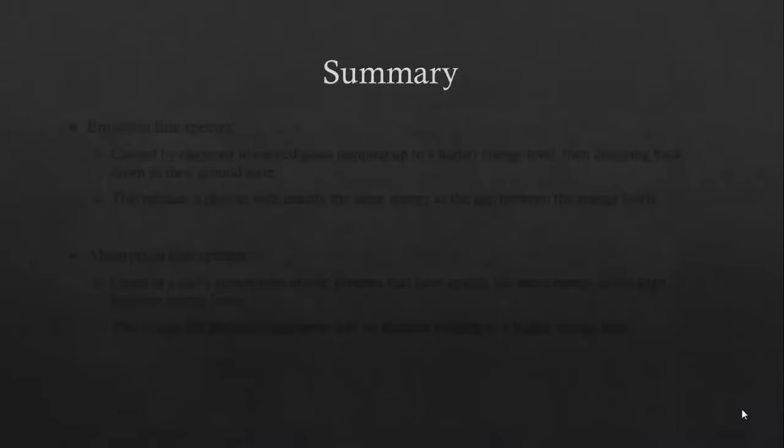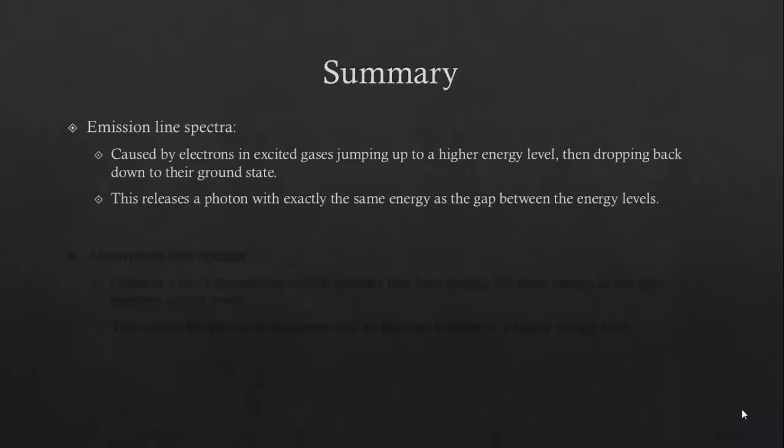So, to summarise, emission line spectra are caused by electrons in excited gases jumping up to a higher energy level, then dropping back down to their ground state. This releases a photon with exactly the same energy as the gap between those energy levels.